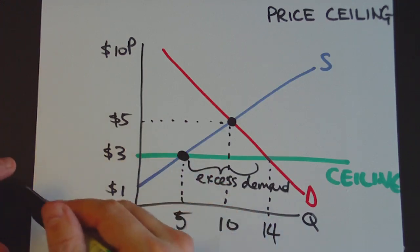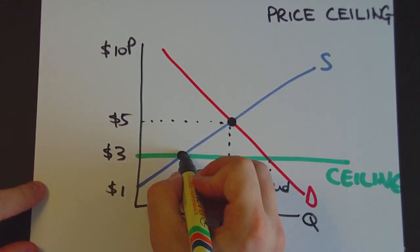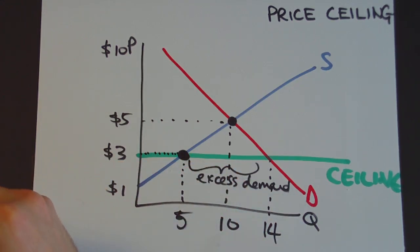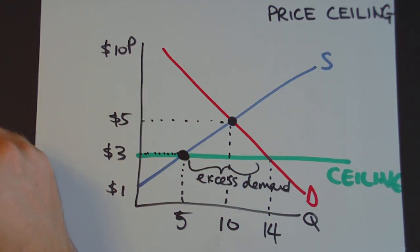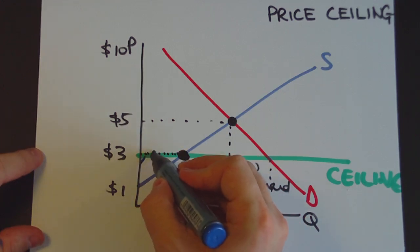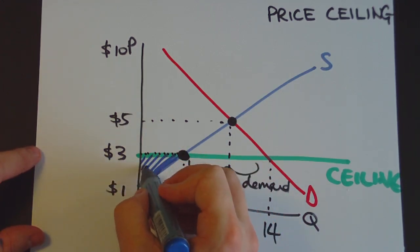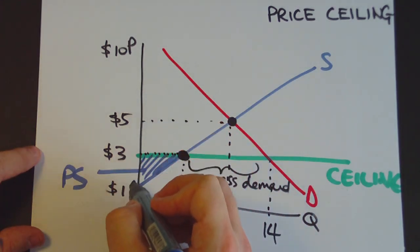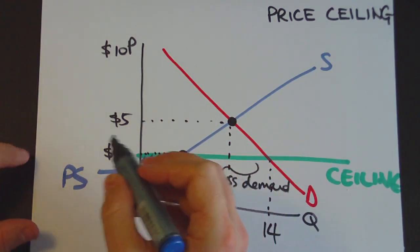So how do we work out producer and consumer surplus? You work out the point at which the market's operating and draw a horizontal line to the vertical axis. Producer surplus is going to be the amount above the supply curve and up to that point. Notice it's pretty small. Producer surplus has gone down from this triangle here down to this tiny little triangle here.